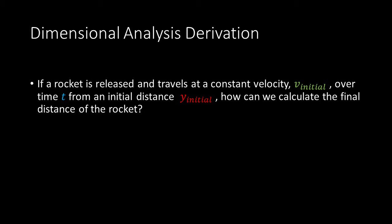If a rocket is released and travels at a velocity v-initial over time t from an initial distance y-initial, how can we calculate the final distance of the rocket? Well, we could state that the final distance is equal to the initial distance, plus the initial velocity times time.